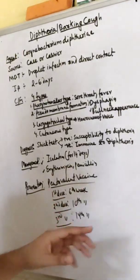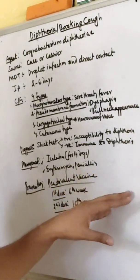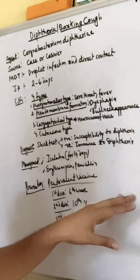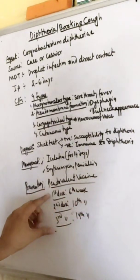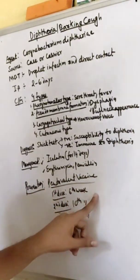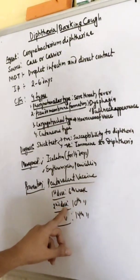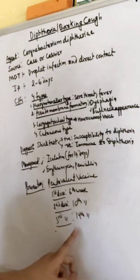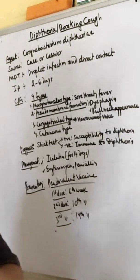For prevention, the pentavalent vaccine is included in the routine immunization program of Nepal. The first dose is given at the 6th week, the second dose at the 10th week, and the third dose at the 14th week.